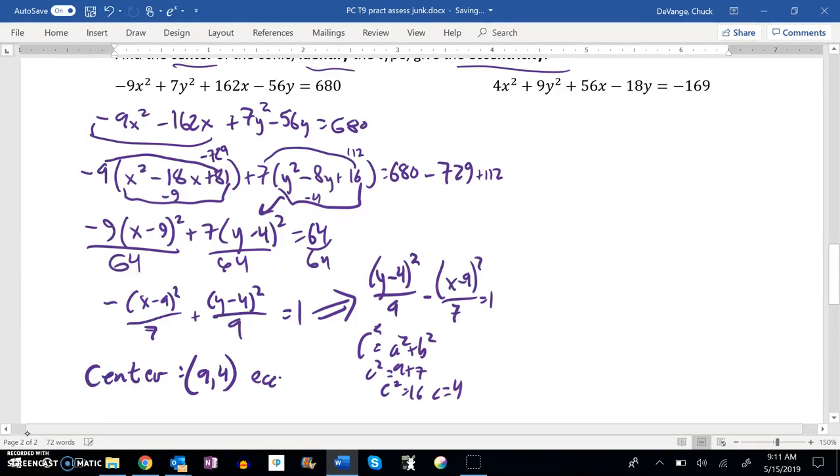So my eccentricity is 4 over the direction that it's going this way, which would be the square root of 9, which is 3. So my eccentricity is 4 thirds.